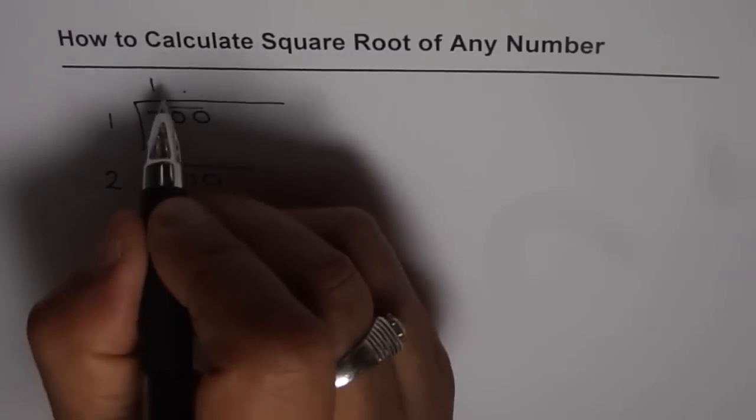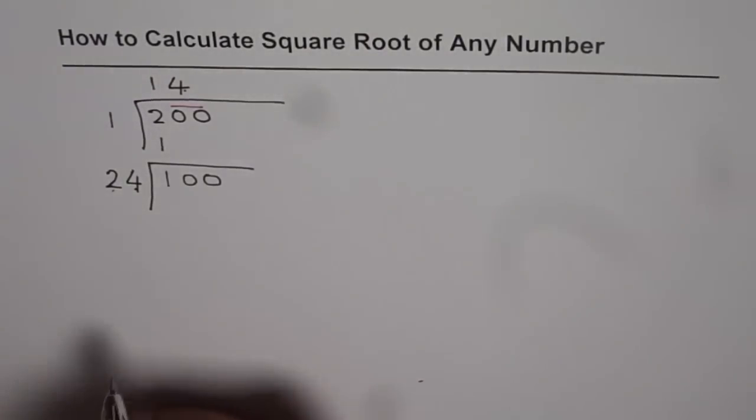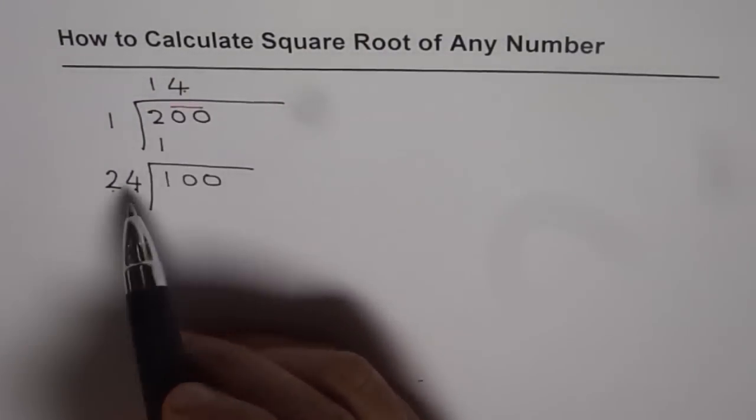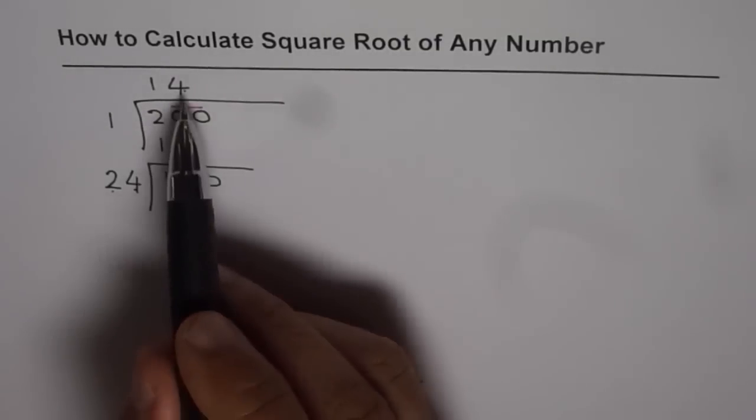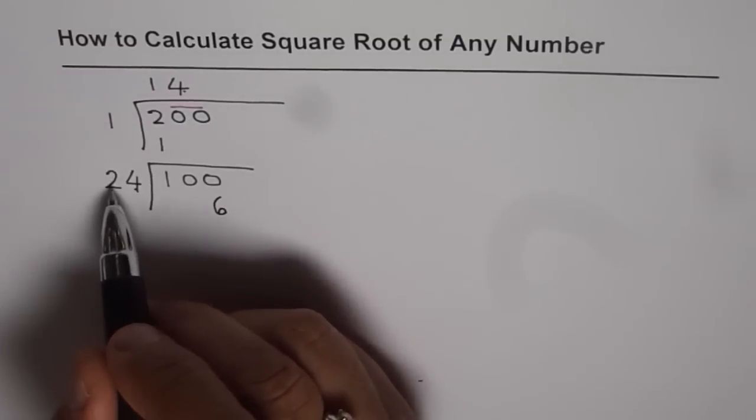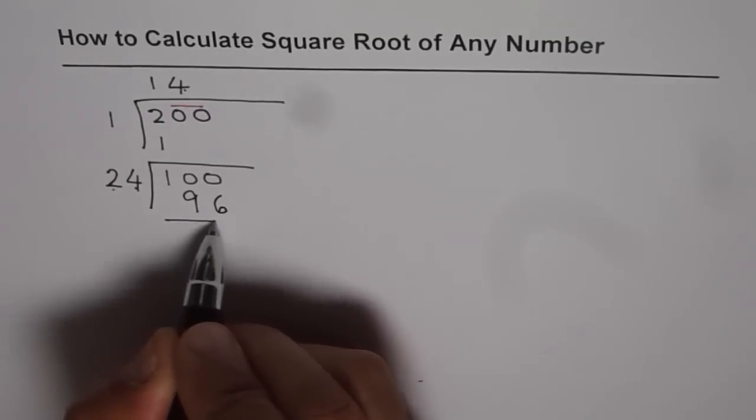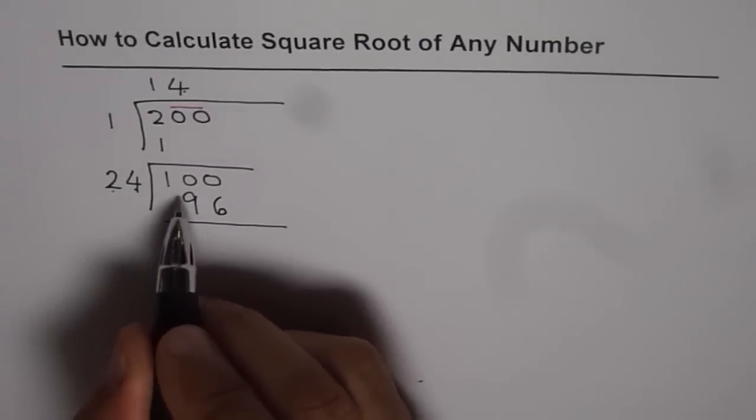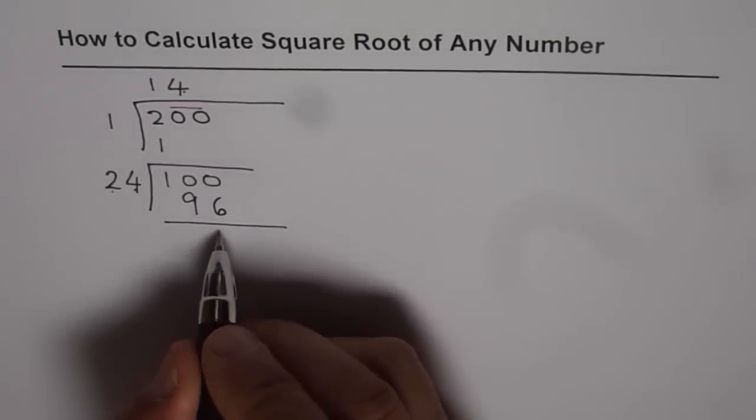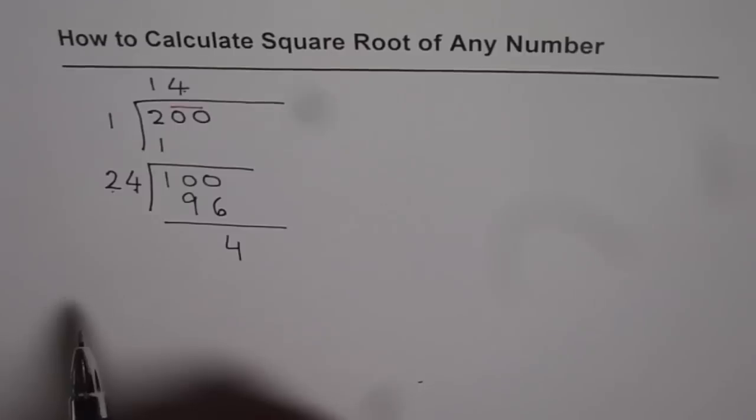Let's try number 4. We'll write 4 here and 4 here also - the same number has to come, that is the technique. 4 times 4 is 16, so we get 6 here and 1. 4 times 2 is 8, and 8 plus 1 is 9, so we get 96. Take away 96 from 100, we get 4. So 14 is the square root of 200, very close if we are considering whole numbers.